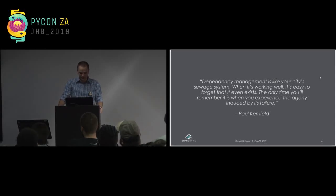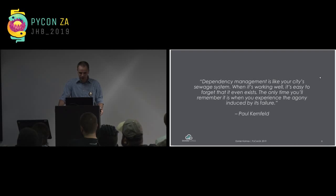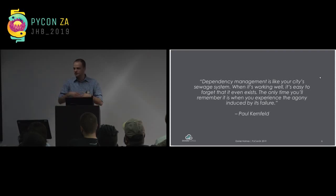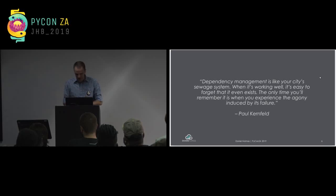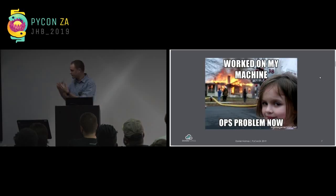I recently came across this quote from a blog and it really hit home: 'Dependency management is like your city's sewer system — when it's working well it's easy to forget that it exists. The only time you remember it is when you experience the agony induced by its failure.' A lot of the time we're using our tools and everything is going well, then we install a new package with weird or conflicting dependencies and everything breaks — and that's just on our local machine, never mind production.